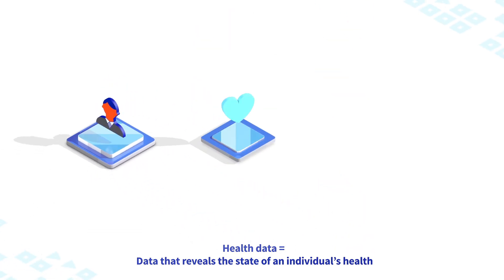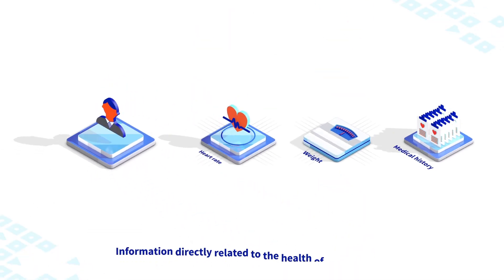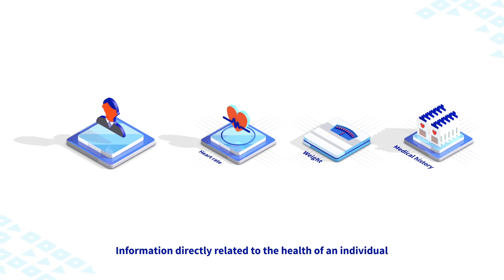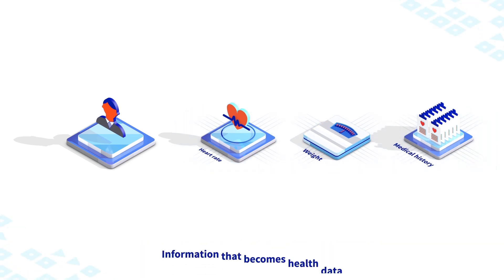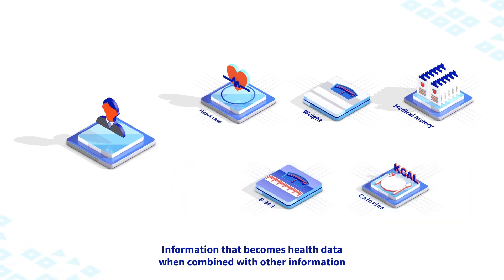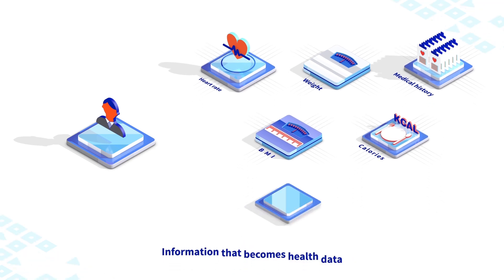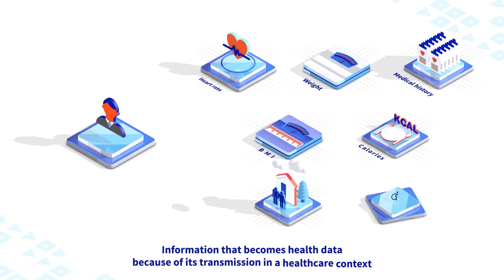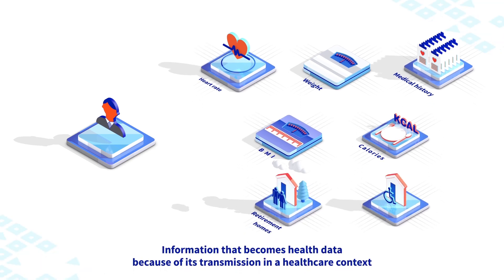There are three categories of health data. First, information directly related to the health of an individual. Second, information that becomes health data when combined with other information. Third, information that becomes health data because of its transmission or use in a healthcare context.